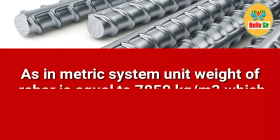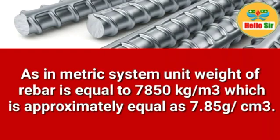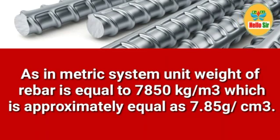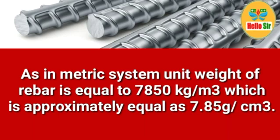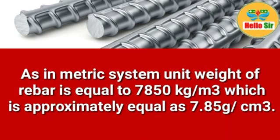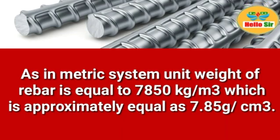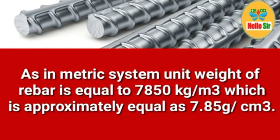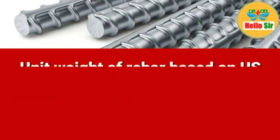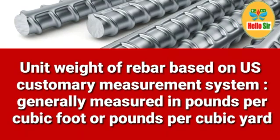In the metric system, the unit weight of rebar is equal to 7850 kg per meter cube, which is approximately 7.85 grams per centimeter cube.